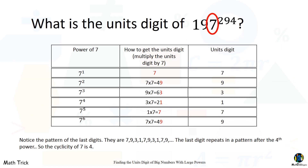Notice the pattern of the last digits — they are seven, nine, three, one, seven, nine, three, one, seven, nine. The last digit repeats in a pattern after the fourth power. So the cyclicity of seven is four.